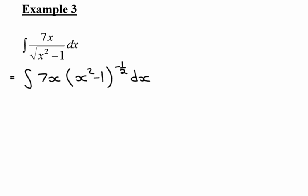I've got the 7 which I can actually just take out and I've got the x. So I always start by writing down exactly how I want it to look and then doing my manipulation. So I would like to have my x squared minus 1 to the negative 1 half and I would like to have the derivative of that inside function.